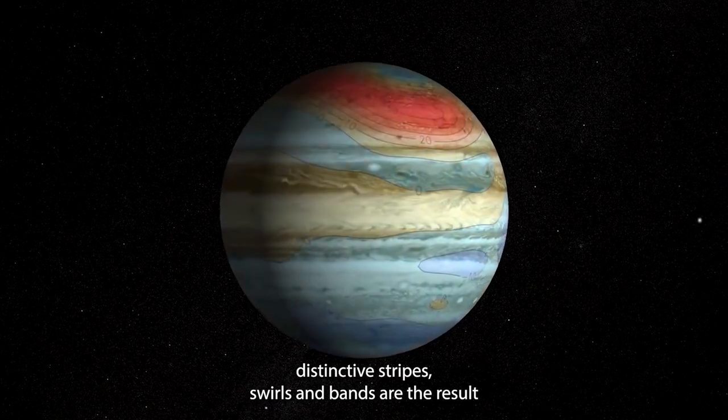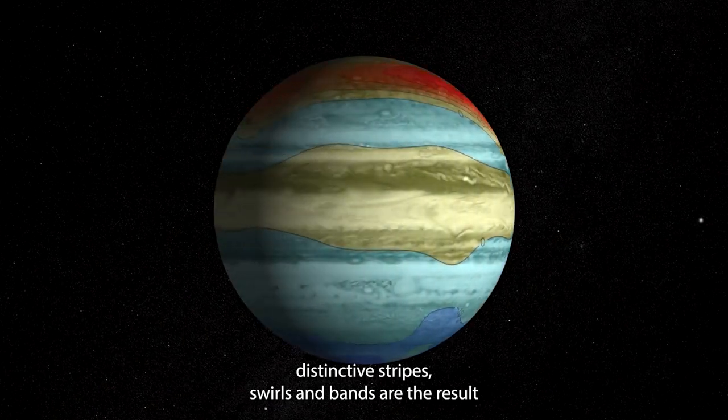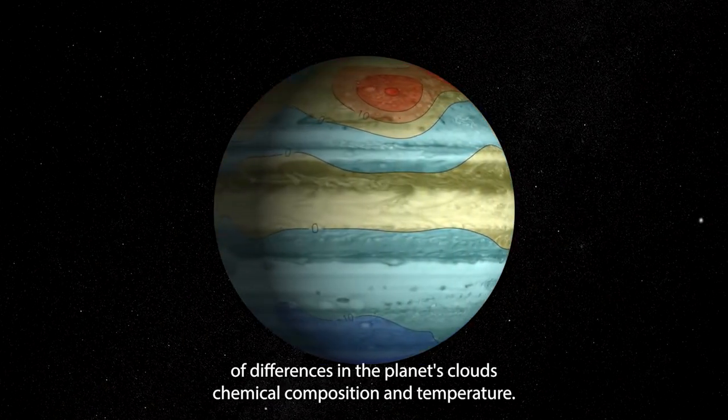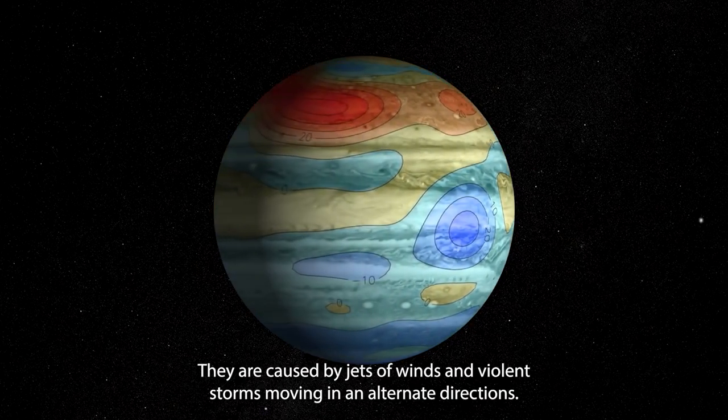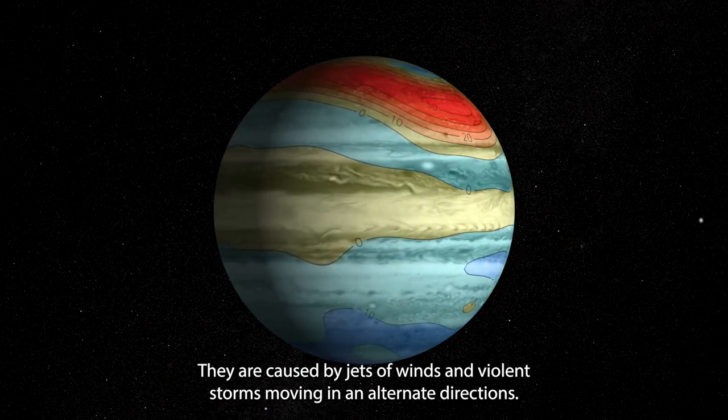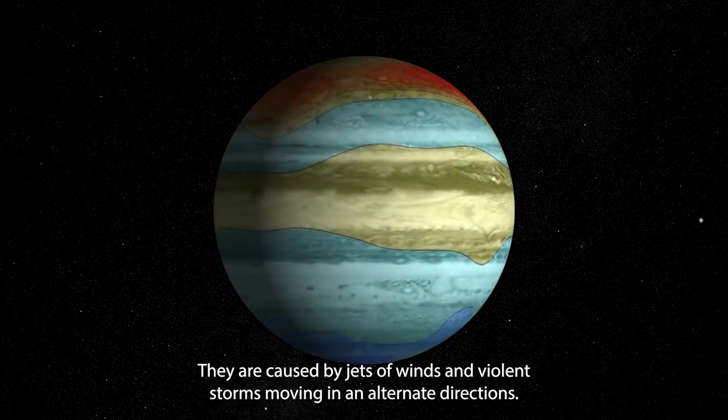Jupiter's distinctive stripes, swirls and bands are the result of differences in the planet's clouds' chemical composition and temperature. They are caused by jets of winds and violent storms moving in alternate directions.